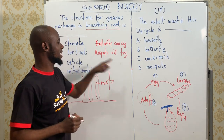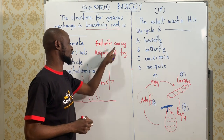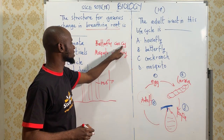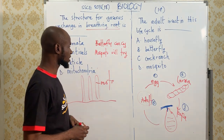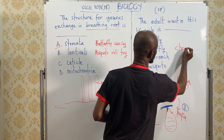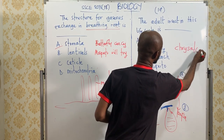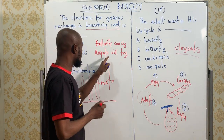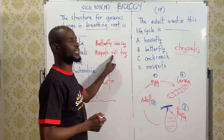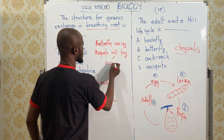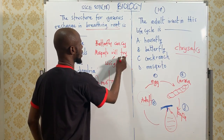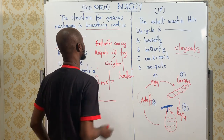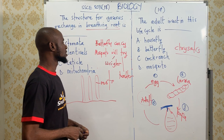So for butterfly, the larva stage is caterpillar. The pupa stage is chrysalis — let me spell chrysalis for you so that you don't get it wrong. You can expect caterpillar. For mosquito, the larva stage is called a wriggler — let me spell wriggler for you. While the 'try' in the formula is for the pupa stage of a mosquito.